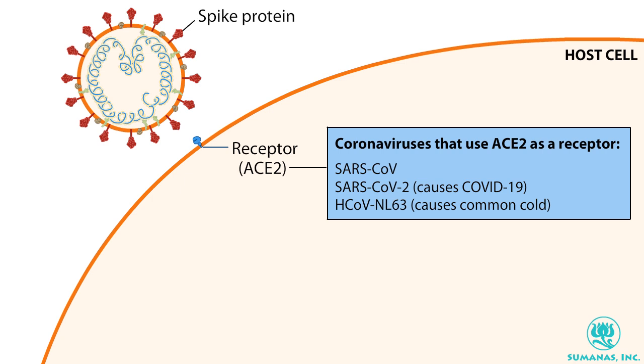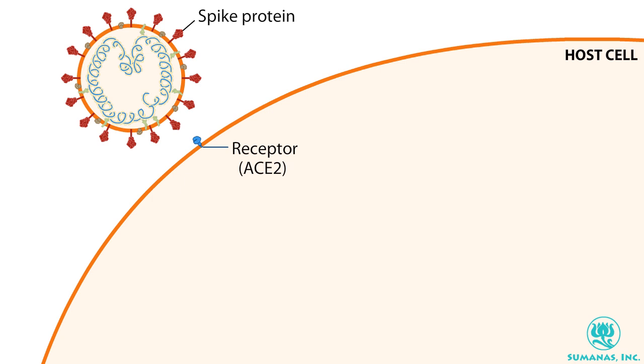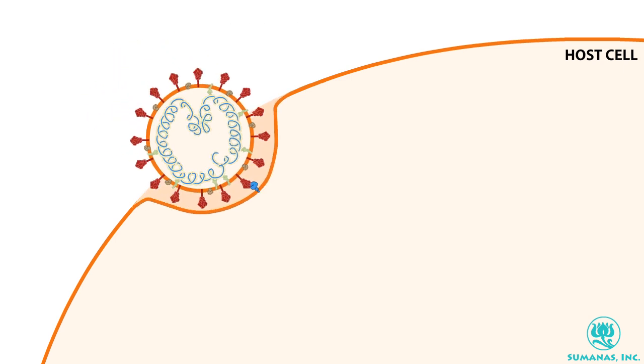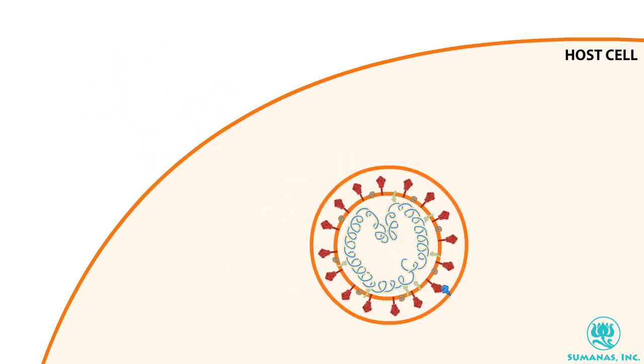ACE2 is on a number of cell types, including lung cells, which explains why the virus causes respiratory infections. After spike proteins bind to receptors, the cell engulfs the virus in a process called endocytosis.